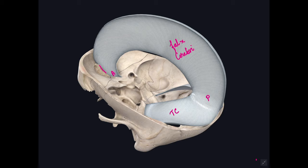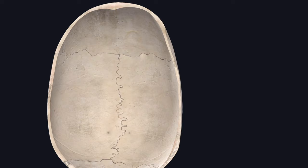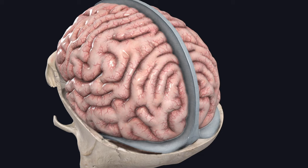The falx cerebri has two margins. The upper margin is convex and attached to the lips of the sagittal sulcus. The lower margin is concave and free. The right and left lateral surfaces of the falx cerebri are related to the medial surface of the corresponding cerebral hemisphere.